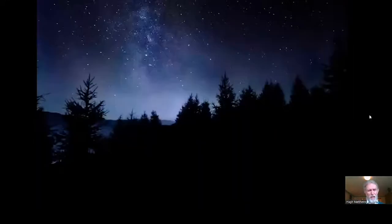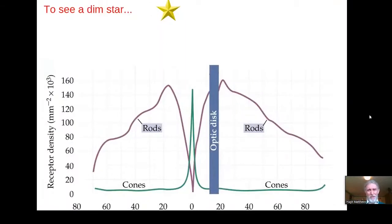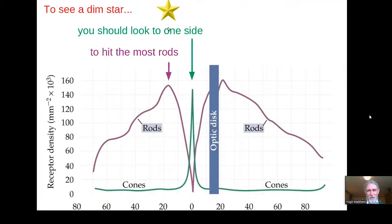But when the light is very dim, we use our rod photoreceptors instead. And therefore, if you want to see something very dim, for example, if you want to see a dim star in the dark night sky, it'd be a good idea to look to one side of it so that you point your cone-dense fovea away from the object you're interested in and allow the image of the star to fall on your very densely packed rods in this region a little bit to one side or the other of the fovea.